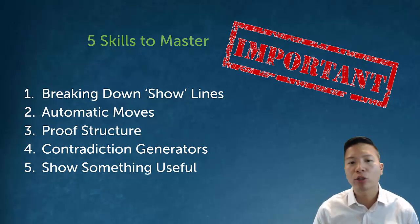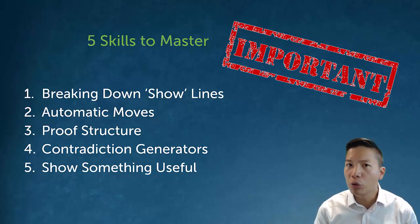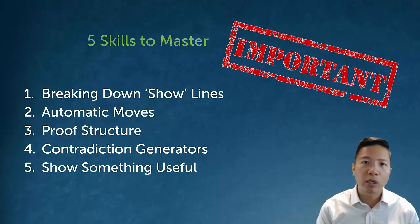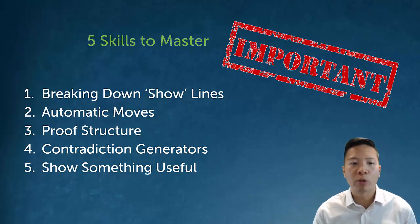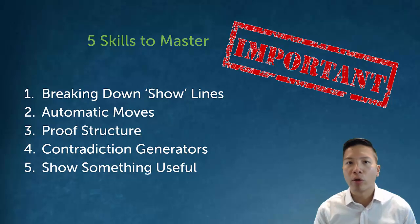That's the basics of derivations — all our rules, understanding show line breakdown, knowing structure, and it boils down to five general skills. First, know how to break down show lines: if it's a conditional, do a conditional derivation; if it's anything else, do an assume ID. Second, know what automatic moves are and apply them — automatic moves are typically your elimination rules. If you have a conjunction, simplify it; if you can do a modus ponens, do a modus ponens.